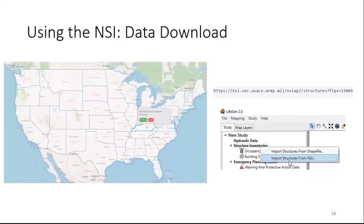On the NSI download page, you just click on a state and it downloads a geo package for the entire state. If you only want a subset, you can use our API to specify a bounding box or a county. You can also use LIFESIM to direct-download for your study area. Note that a few fields available in the geo package or API may not get imported into LIFESIM since it only pulls in what's needed.